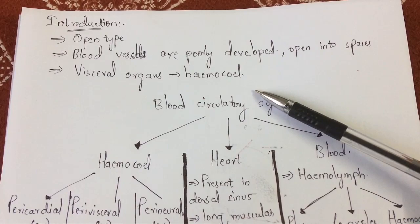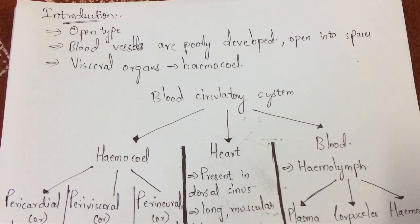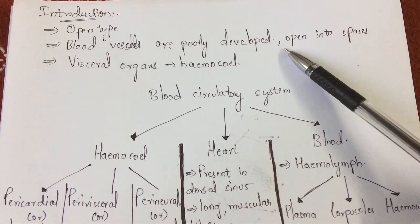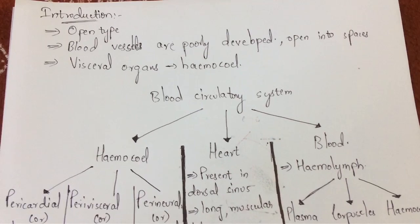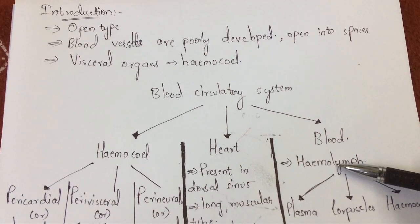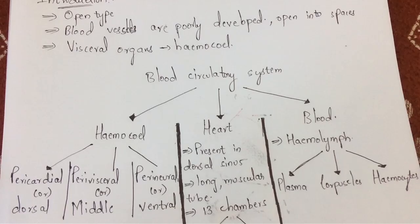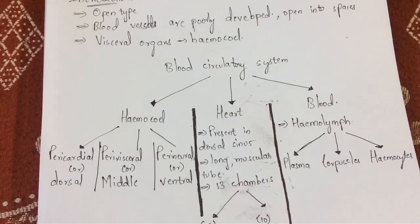What are visceral organs will be explained further in this video. The hemocoel is totally covered — surrounded — by blood. That blood is known as hemolymph. The main parts of the blood circulatory system are the hemocoel, heart, and hemolymph. Firstly, let us talk about the hemocoel.